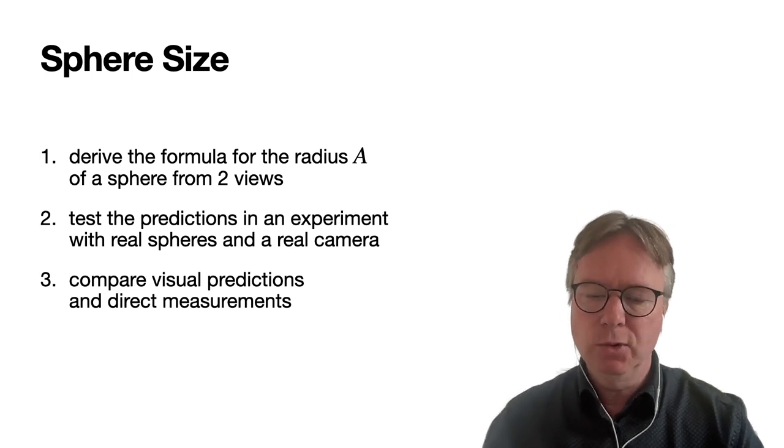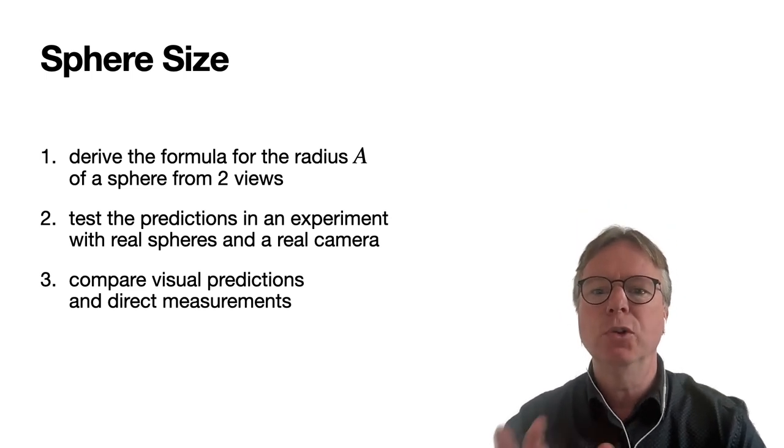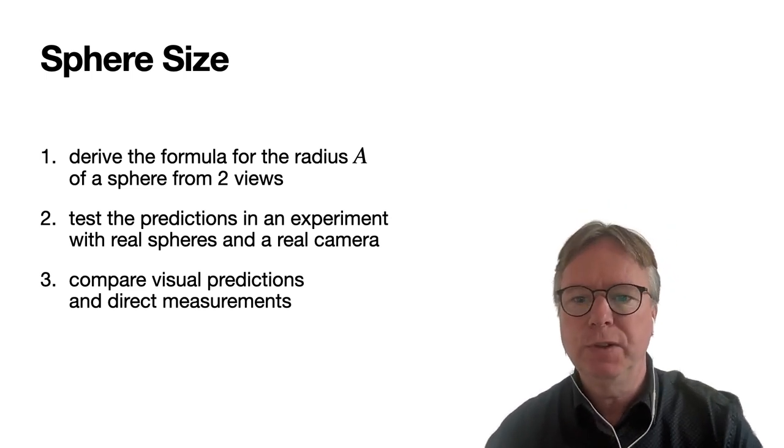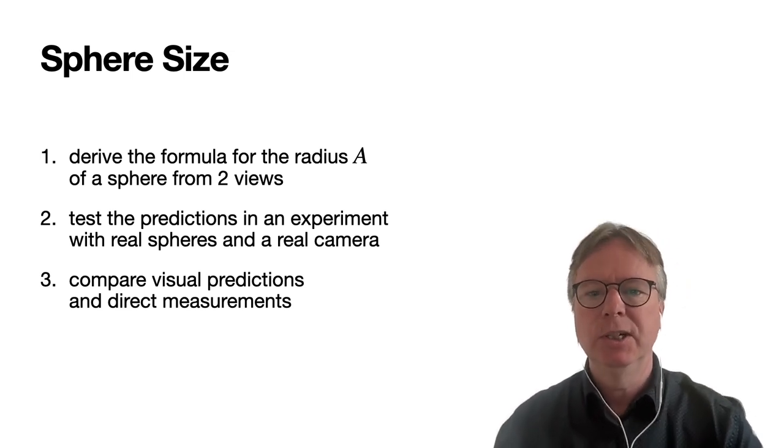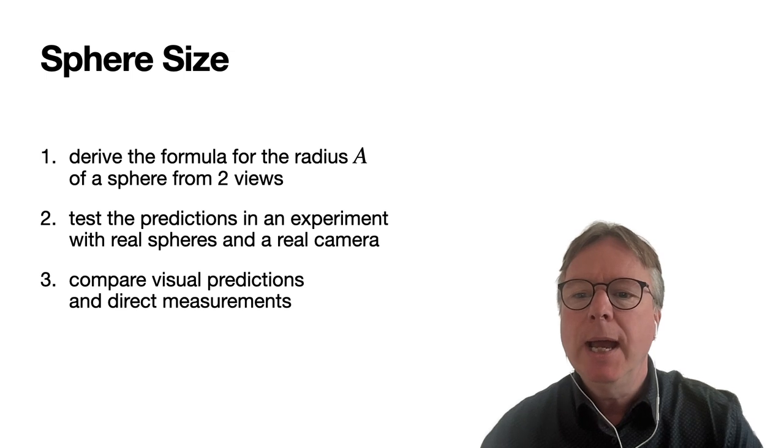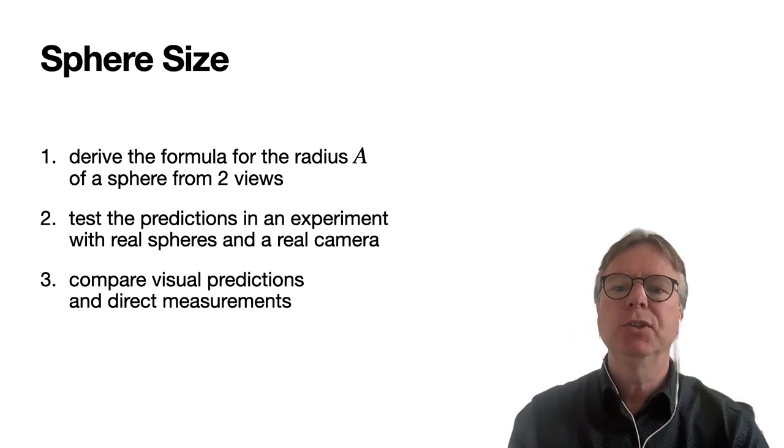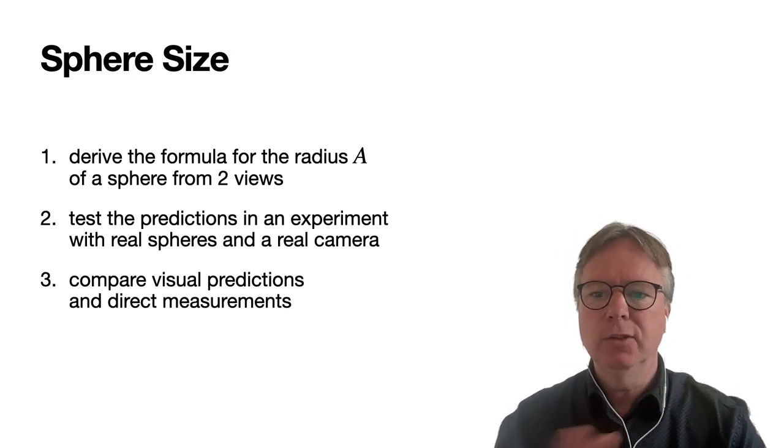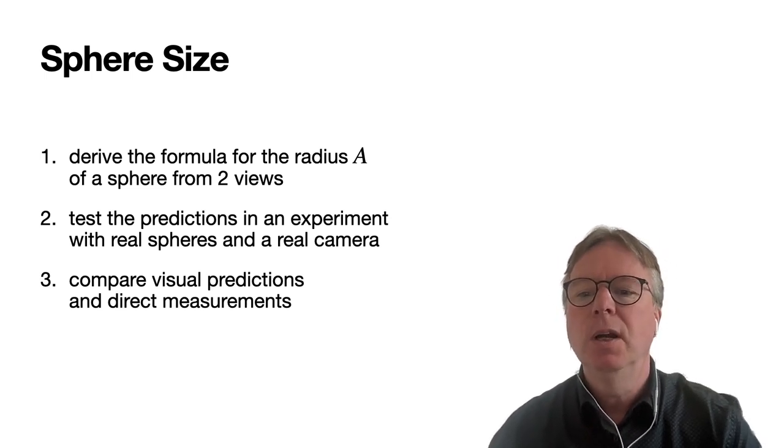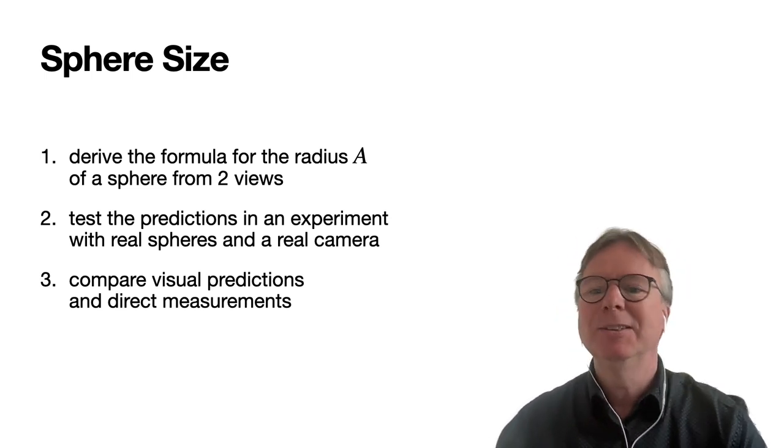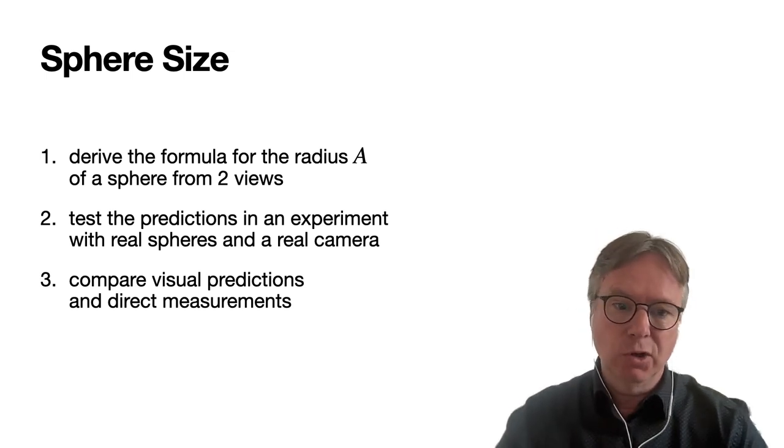Here's what I'm going to do: I'm going to derive a formula for the radius of a sphere from two views, expressed in quadrants. I'm going to test predictions from the formula in experiments with real spheres and a real camera, and then compare the visual predictions from the formula with direct measurements.